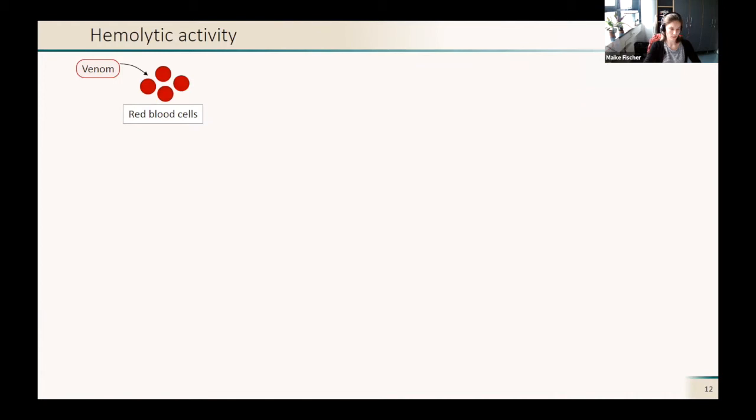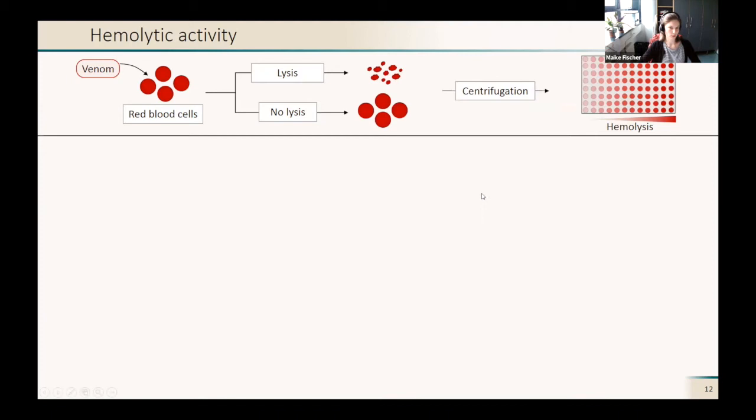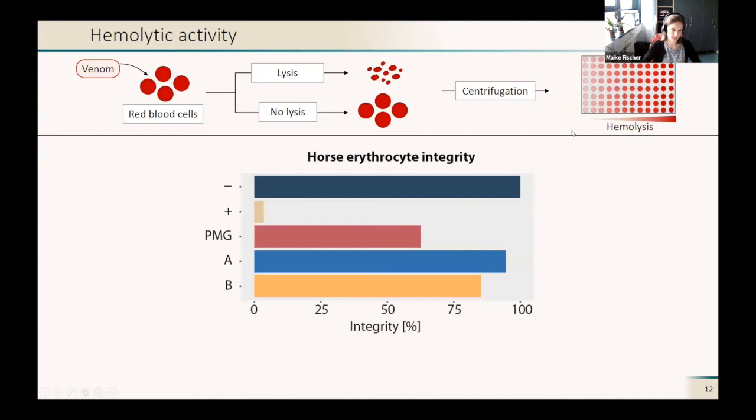Then we tested the effects on red blood cells. We took horse erythrocytes and applied our venom. Either they were lysed or not lysed. When you centrifuge them, you can measure the absorbance of the supernatant, which is red if we have a hemolytic reaction. Or if not, then it's clear. With that, we can measure the hemolysis of horse erythrocytes when we apply our venom.